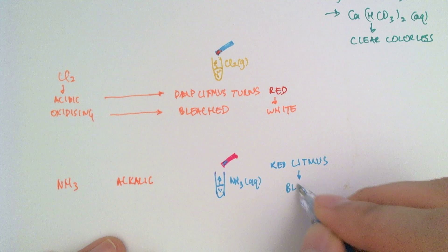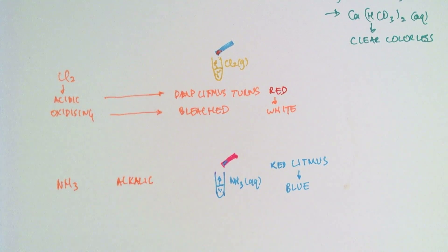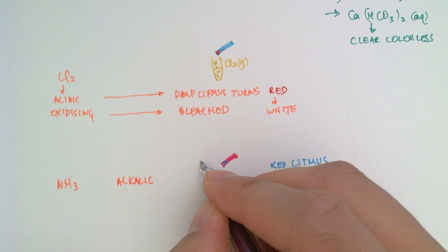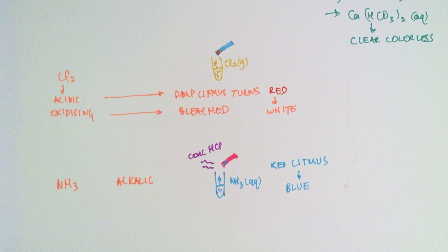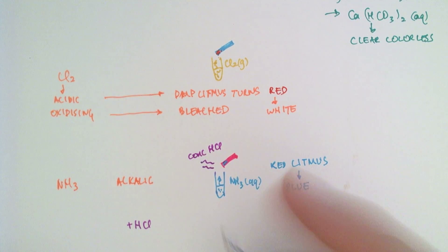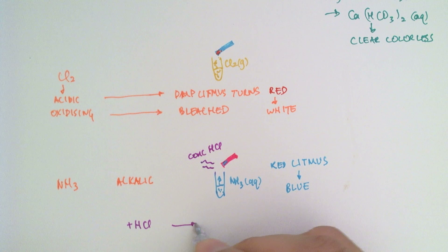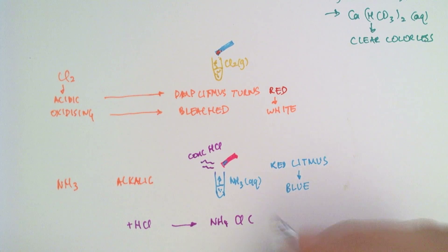So red litmus turns blue. Another test you can do is to release a little bit of concentrated hydrochloric acid fumes. And if you do that, you react with the hydrochloric acid to give you this white cloud of ammonium chloride crystals.